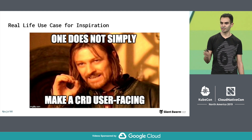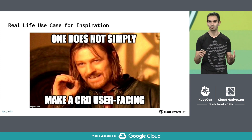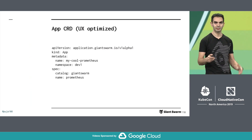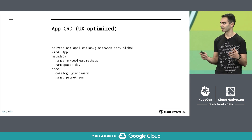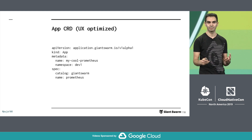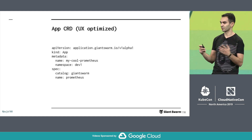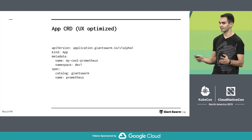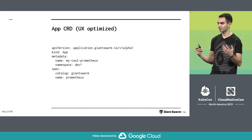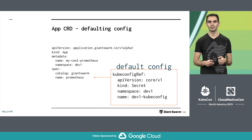I brought a use case from Giant Swarm to show you how that could look. Imagine there is a CRD that lets users install apps, and you want to make it as easy to use as possible. We could let the user fill out the full YAML, but we could also just let them say: I want Prometheus from a Giant Swarm catalog — and that's it. Then based on context and business logic, we might be able to help get that done.